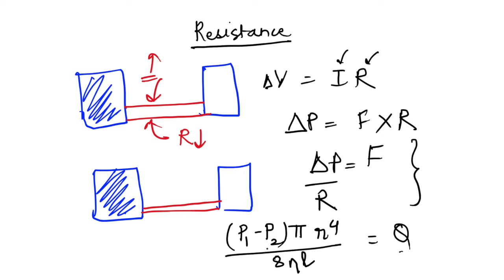Arterioles are the primary resistance vessels. For individual tissue beds arranged in parallel, the formula for total resistance is: 1/R = 1/R1 + 1/R2 + 1/R3. In series we simply add resistances, but in parallel we use this reciprocal formula. These resistances of all arterioles in series contribute to the total peripheral resistance.